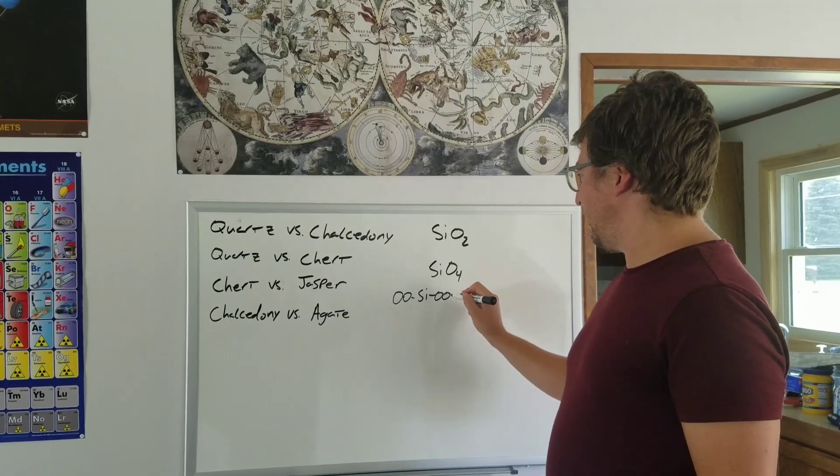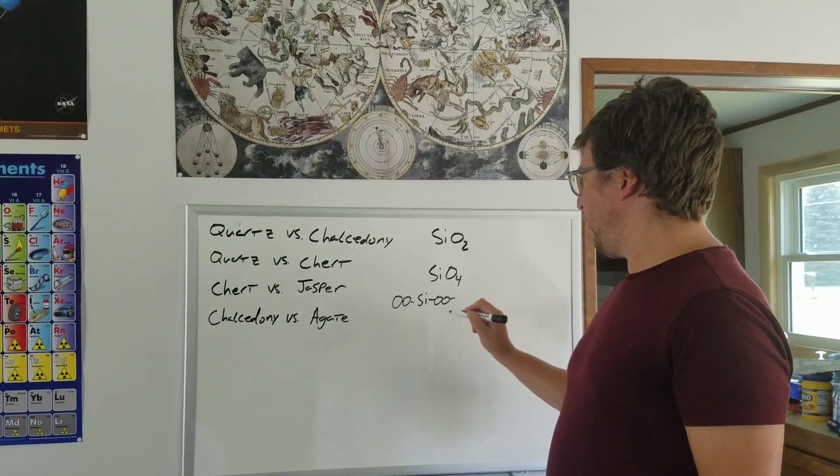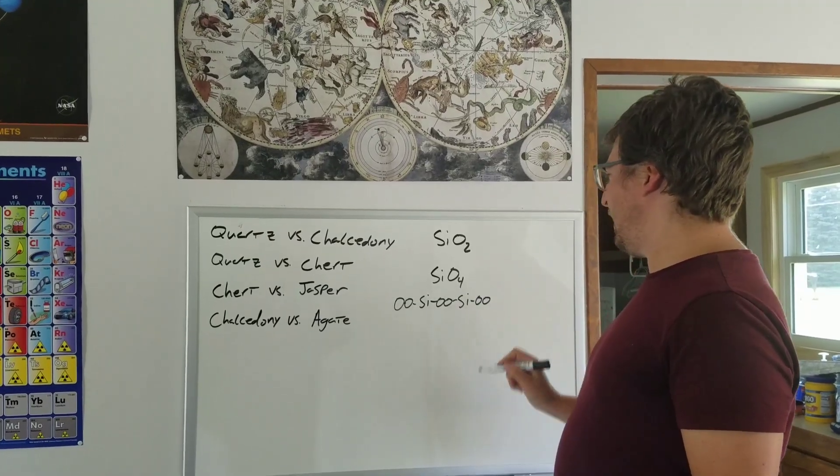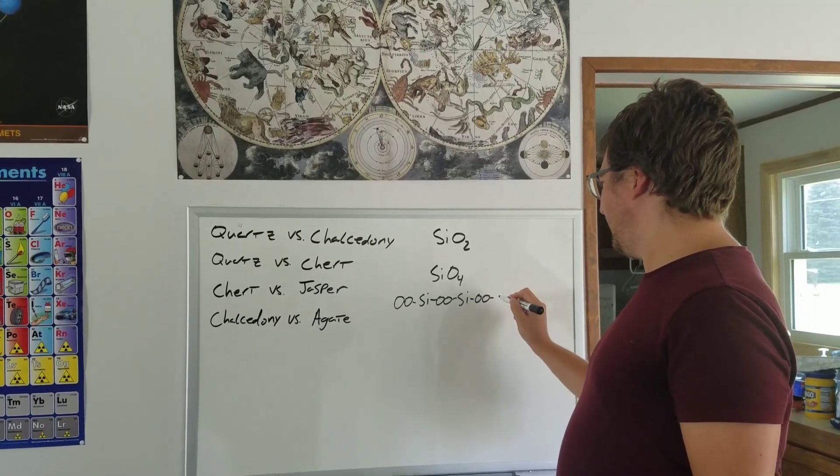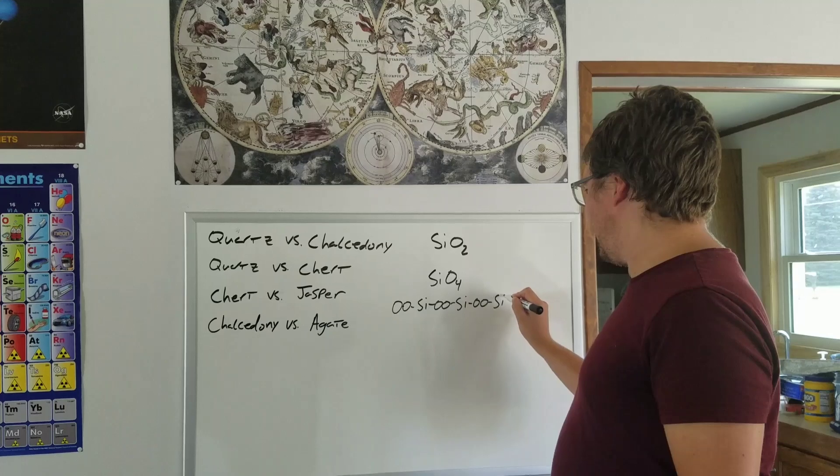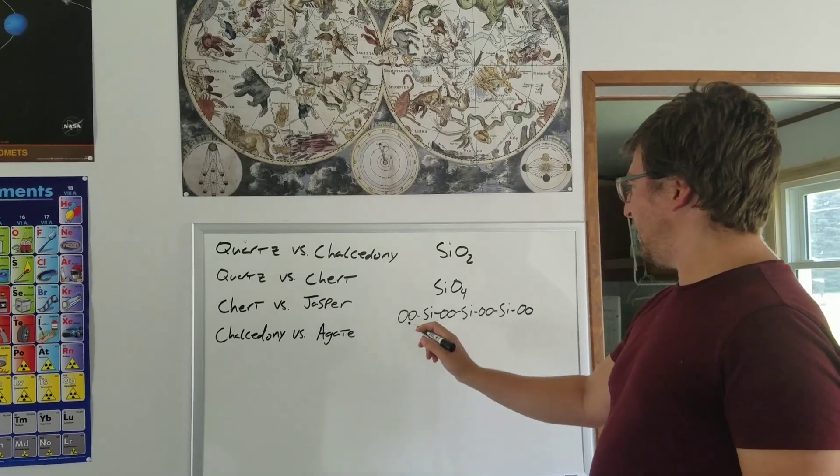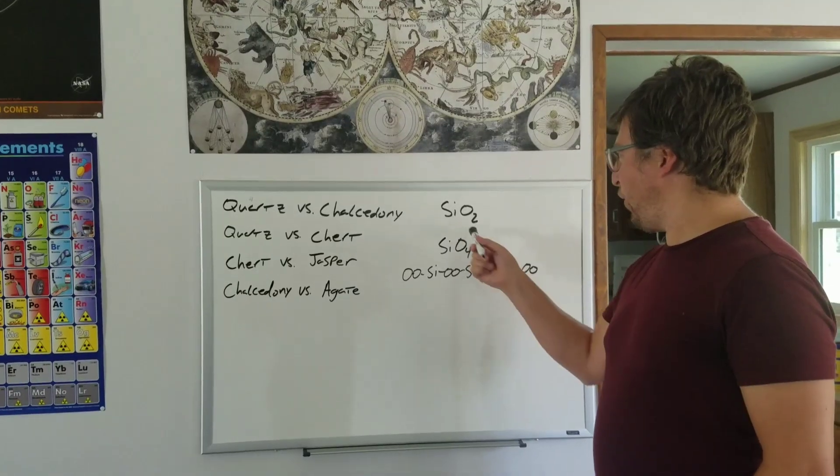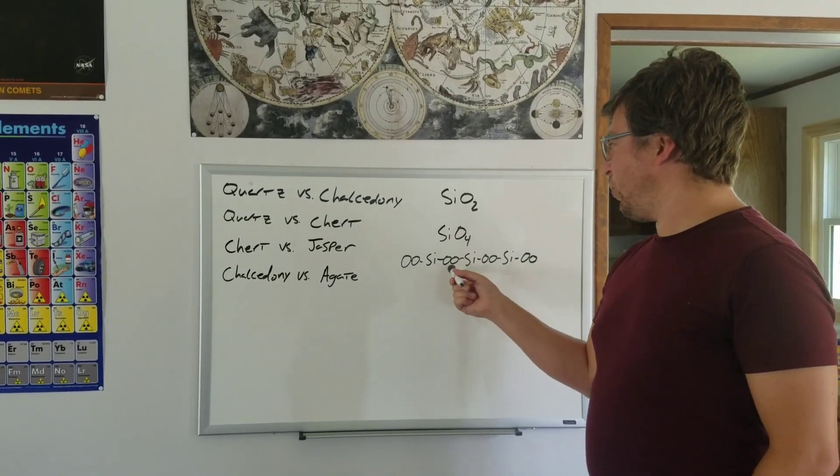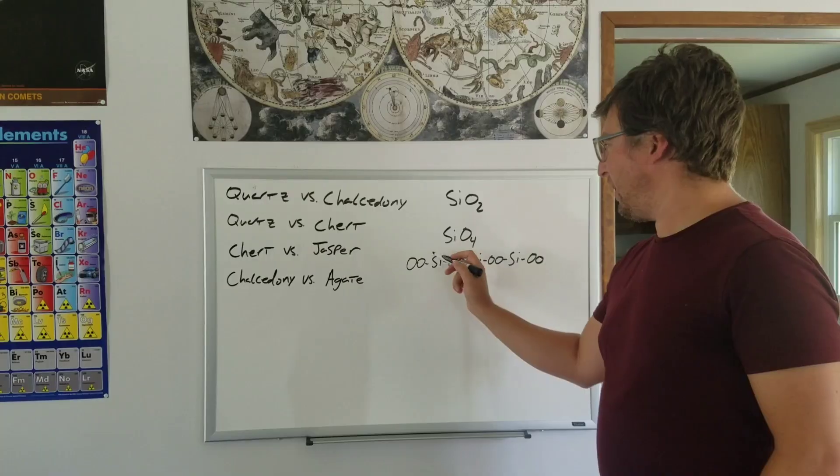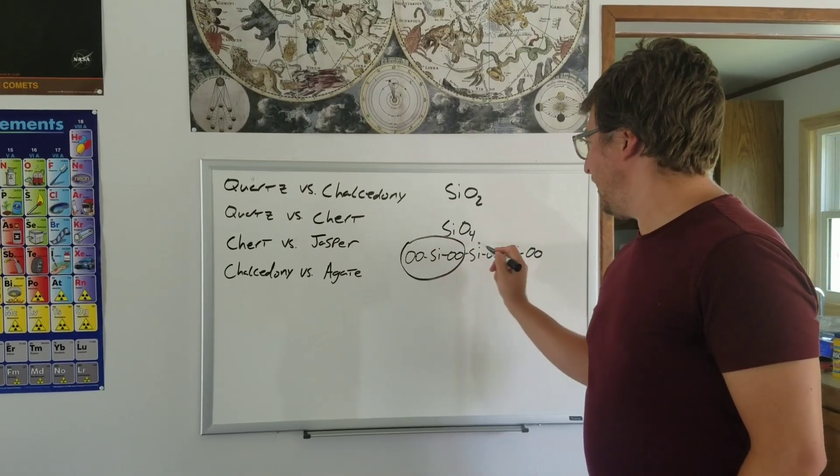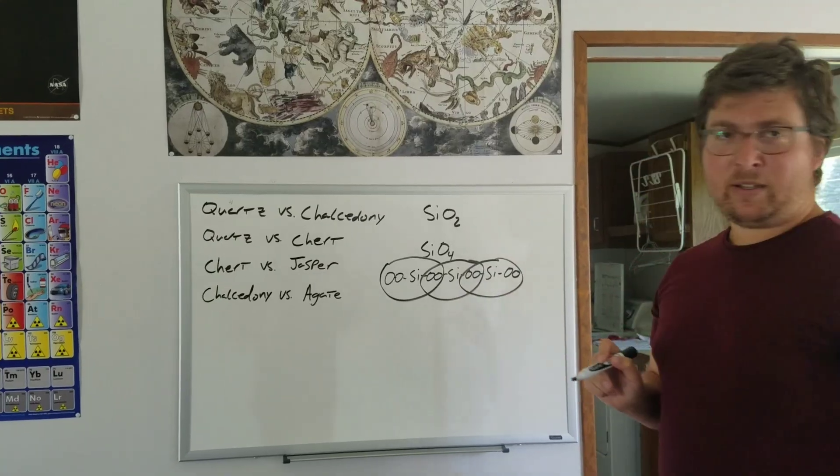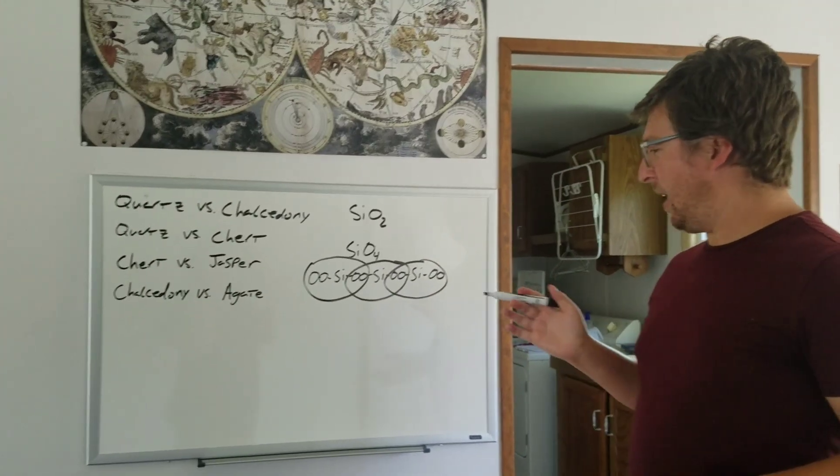However, then silicon comes along and says, oh hey, look, there's two free oxygens there. Let me just bind onto that and grab two more. And then another silicon says, oh hey, look at those two oxygens over there. Let me just bind onto that. And what you end up with is a chain of silica, where the formula actually turns into SiO2, even though each one of these is like an SiO4. But the situation is, they all just kind of share a pair of oxygen molecules there.